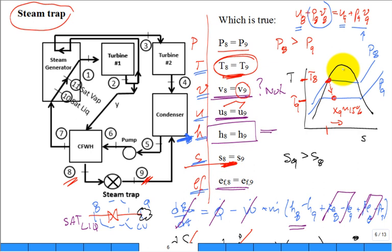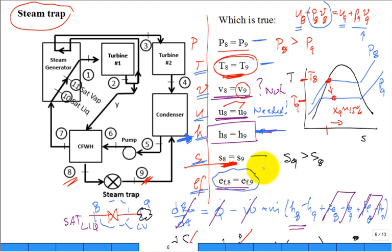For flow exergy: is it easier to extract work from the fluid at state 8 or state 9? State 9 has had entropy production. Multiplying that by the dead-state temperature gives exergy destruction. So EF9 < EF8 — the flow exergy went down. The steam trap didn't help — it destroyed exergy. That's a great discussion of the steam trap. This is part of the core of the class — hopefully you walk away understanding all of that.